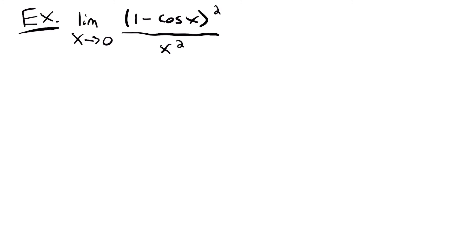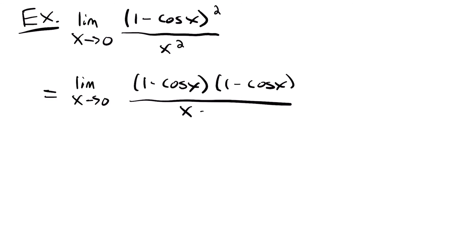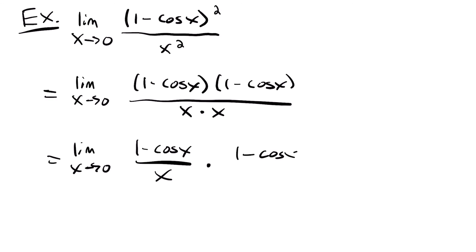Lastly, we're going to look at the limit as x approaches 0 of 1 minus cosine x quantity squared over x squared. One of our special limits is that 1 minus cosine x divided by x equals 0. We have 1 minus cosine x squared that can be split into two quantities, and x squared which can be split into x times x. So we can rewrite this as the limit as x approaches 0 of 1 minus cosine x times 1 minus cosine x over x times x, which splits into two components: 1 minus cosine x over x, times 1 minus cosine x over x. This is just 0 times 0, which equals 0.